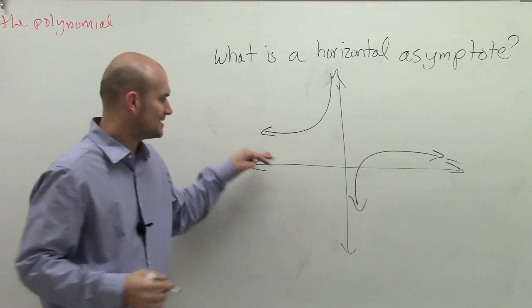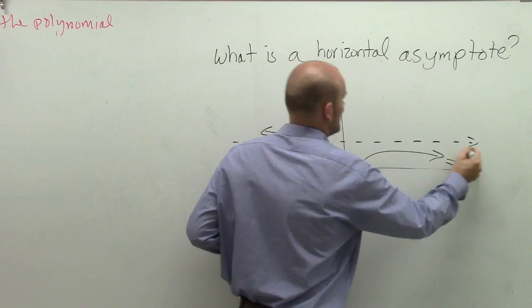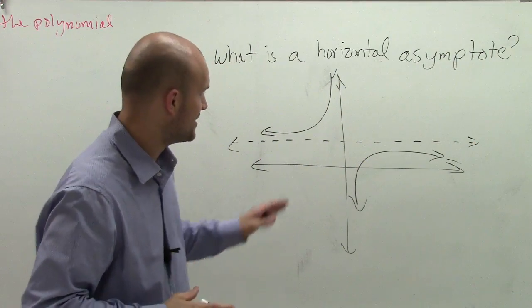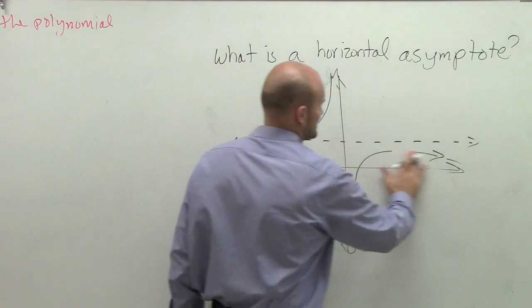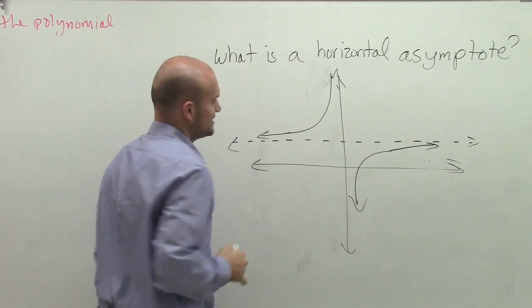What it looks like is this graph is approaching this little dotted line we have here. That little dotted line is what we call a horizontal asymptote. The definition for a horizontal asymptote is,